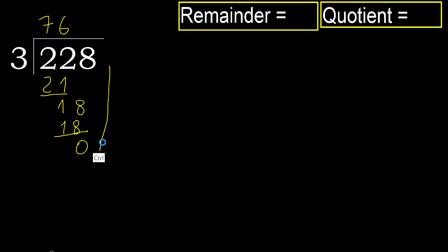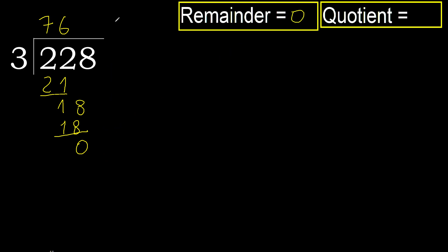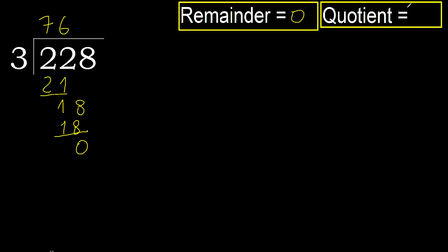There is no next number, therefore finish it. 228 divided by 3 is done here.